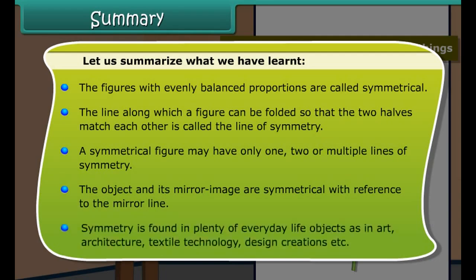Summary: Let us summarize what we have learned. The figures with evenly balanced proportions are called symmetrical. The line along which a figure can be folded so that the two halves match each other is called the line of symmetry. A symmetrical figure may have only one, two, or multiple lines of symmetry. The object and its mirror image are symmetrical with reference to the mirror line. Symmetry is found in plenty of everyday life objects as in art, architecture, textile technology, design creations, etc.